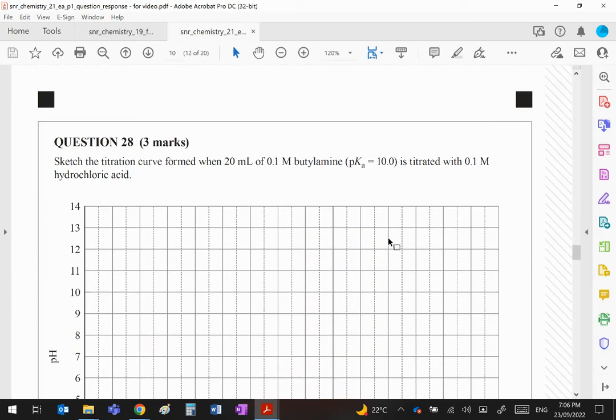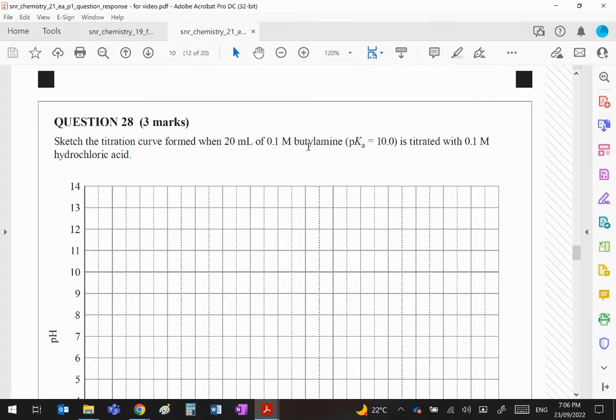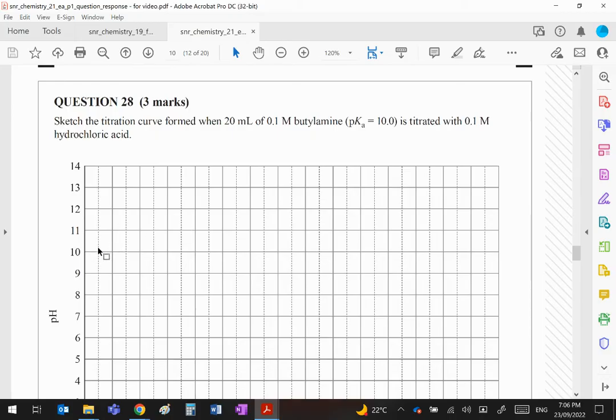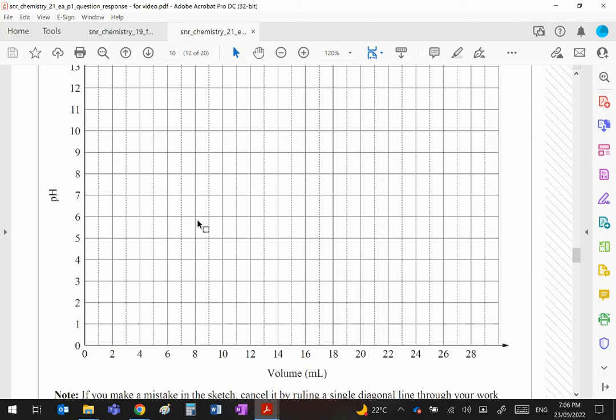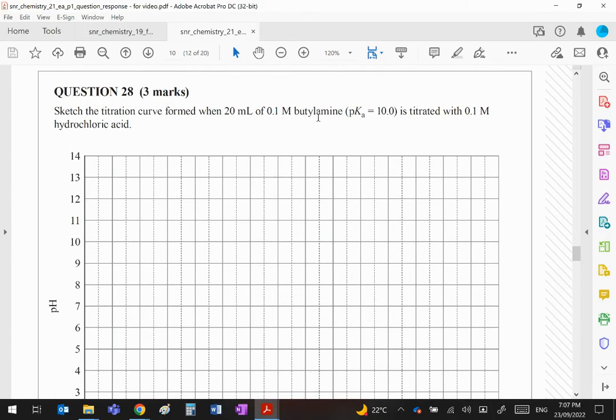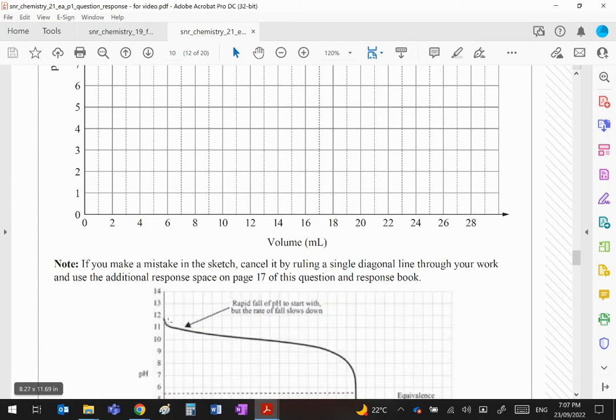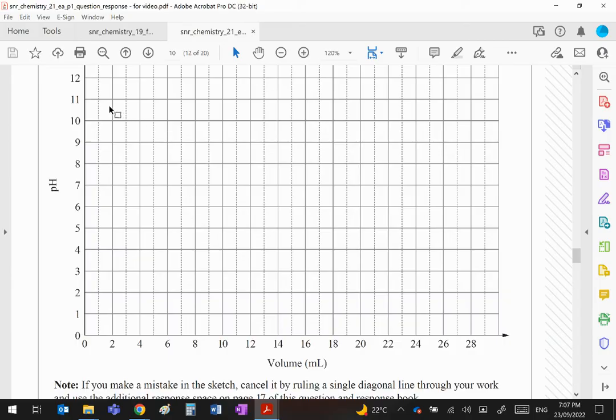And finally, the titration curve formed when 20 ml of butylamine, that's a weak base, pKa 10, is titrated with 0.1 M hydrochloric, a strong acid. So pKa 10 means you're starting up there. I've got the answer from the book. It won't be 10 by the way guys, that's the pKa which is obtained at the half equivalence point. If you've got butylamine I would start it usually around about 11 or 12 maybe. It's a weak base, it doesn't go up as far as 14, even 13 would be too high. 11 or 12 would be a good starting point. You can see their answer has started somewhere in between the two. Now then you gradually then drop that until you get to the end point.